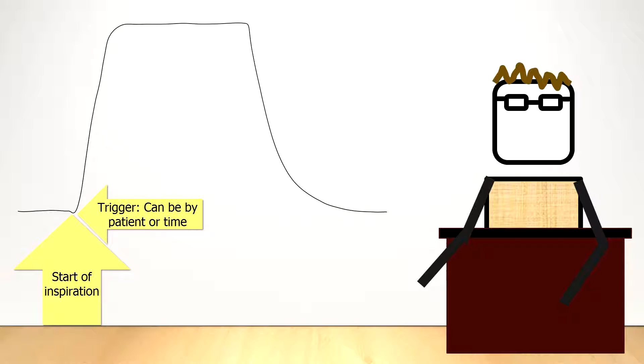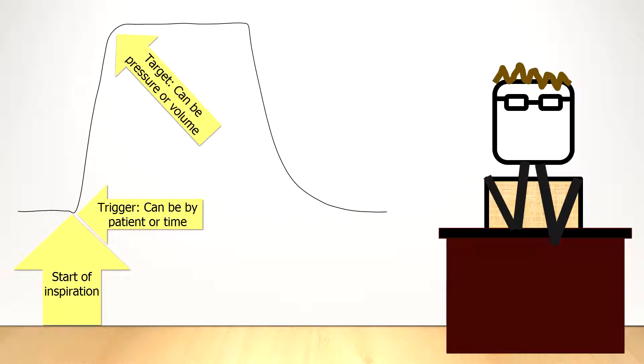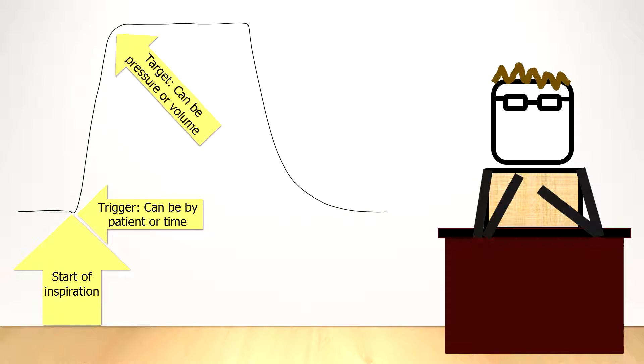The next phase of the ventilator cycle is the target. The target is simply the set pressure or volume that you determined to be the control mode for the ventilator. If you set the ventilator to a certain number of milliliters of volume, then the target is when the ventilator reaches that total volume to be delivered.